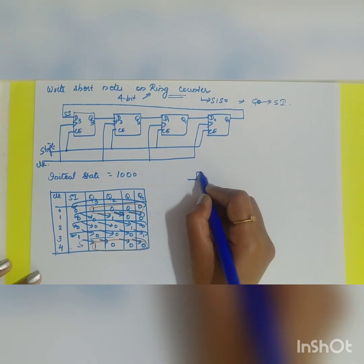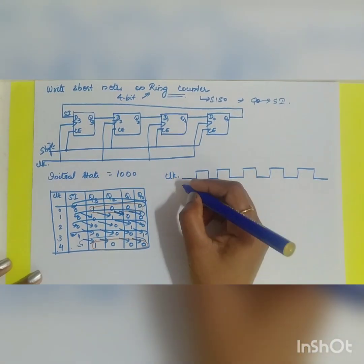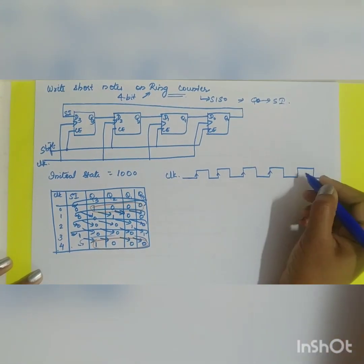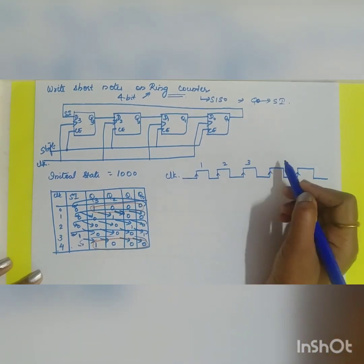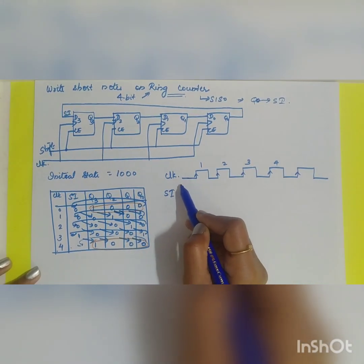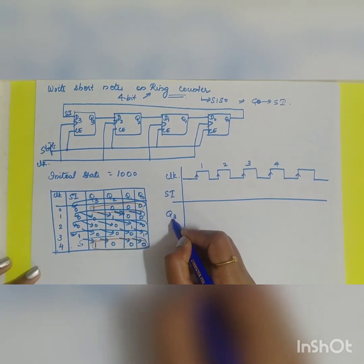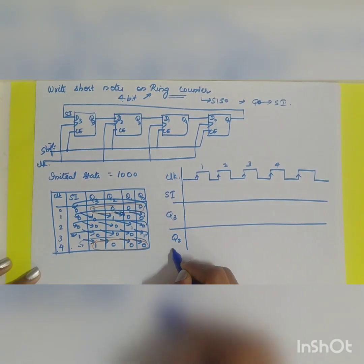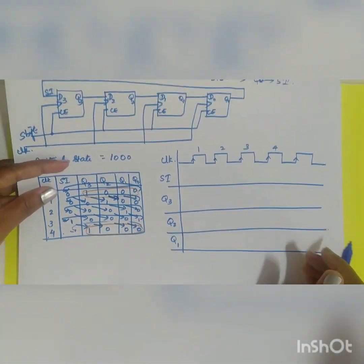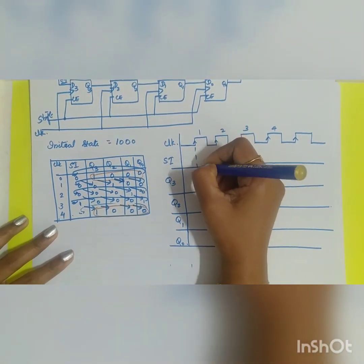Now let us draw the timing diagram. The clock is positive-edge triggered — here are rising edges 1, 2, 3, 4. We take the serial input as the input data line, followed by output waveforms Q3, Q2, Q1, and Q0.